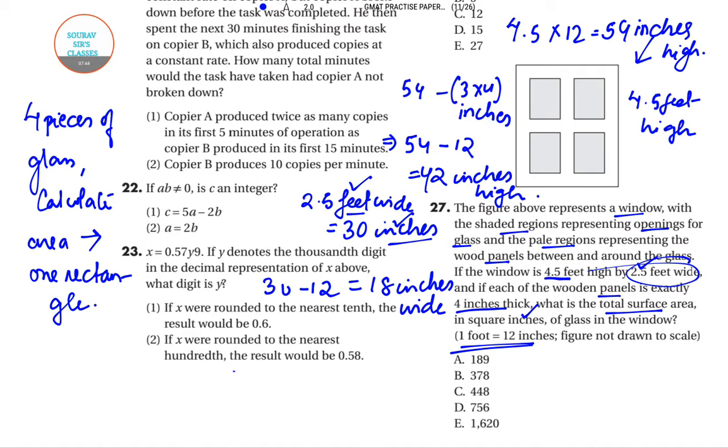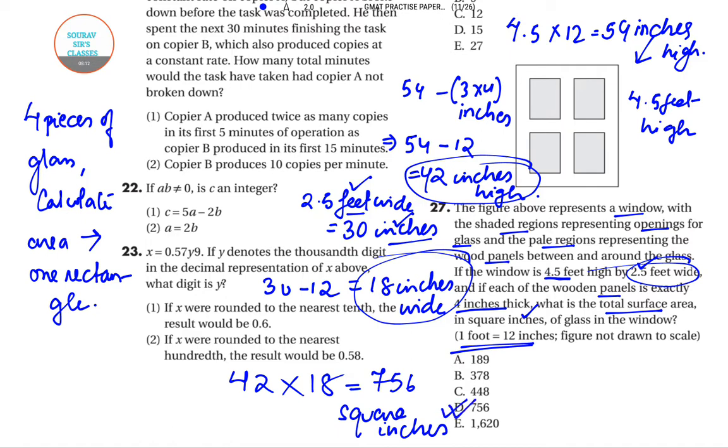Now 42 times 18 will give 756 square inches. This was the reason why we were changing from feet to inches all the time, because we require the answer in square inches. So the correct answer will be option D, because it corresponds to the value that we have computed.